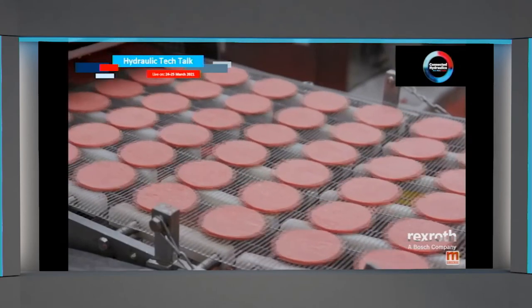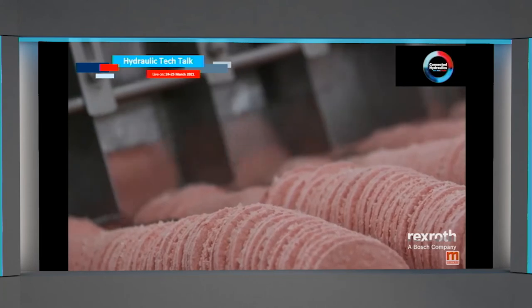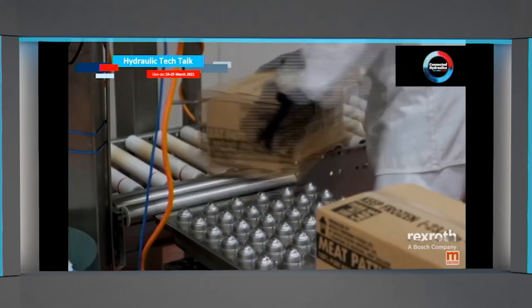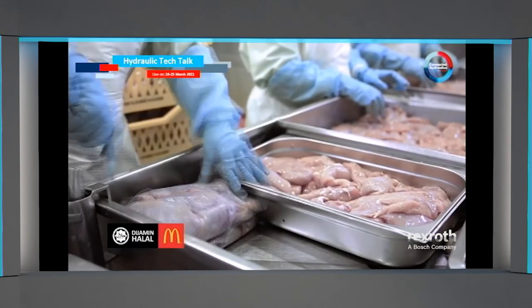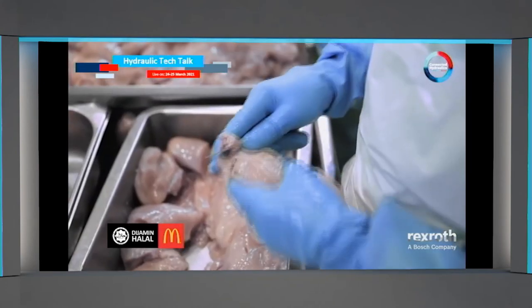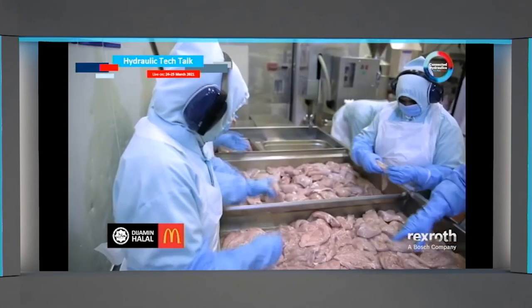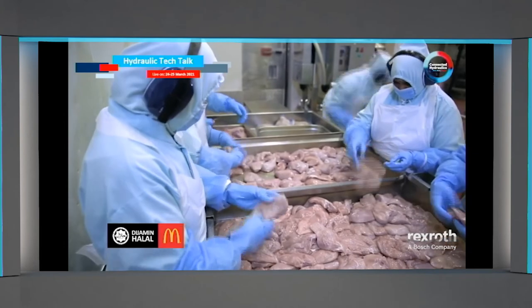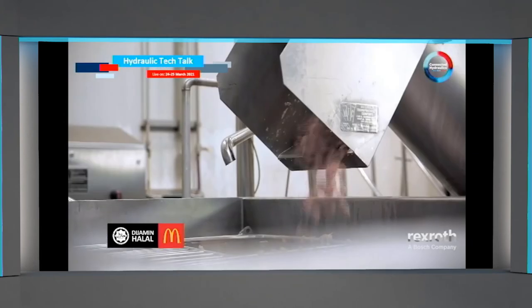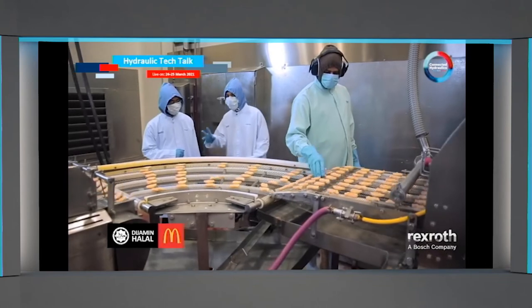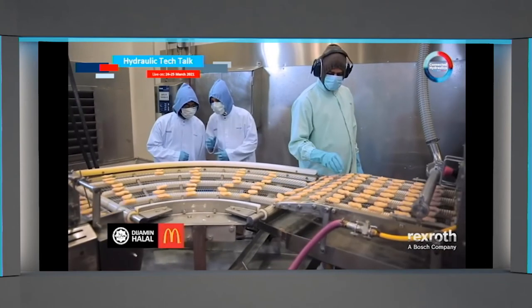We can see they are processing meat — for example, for chicken and beef — using the maxi mixer and blender.